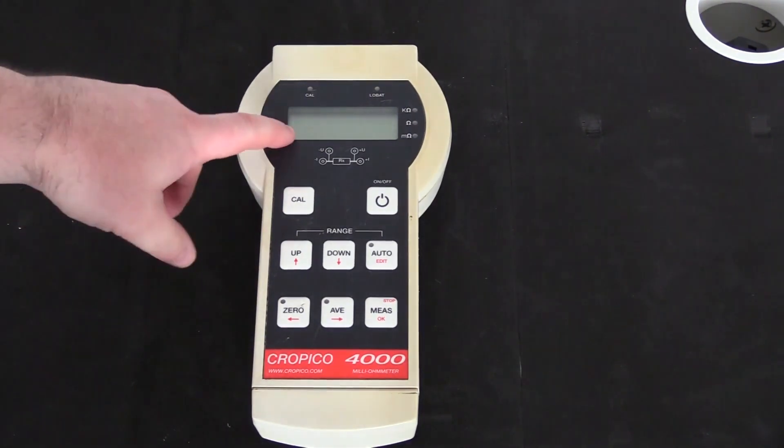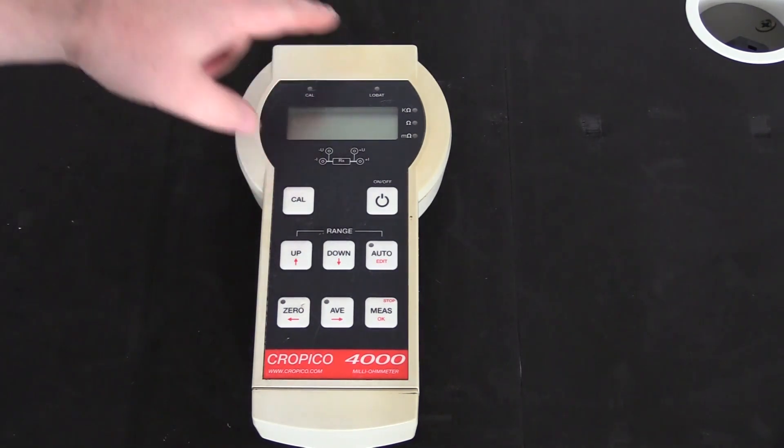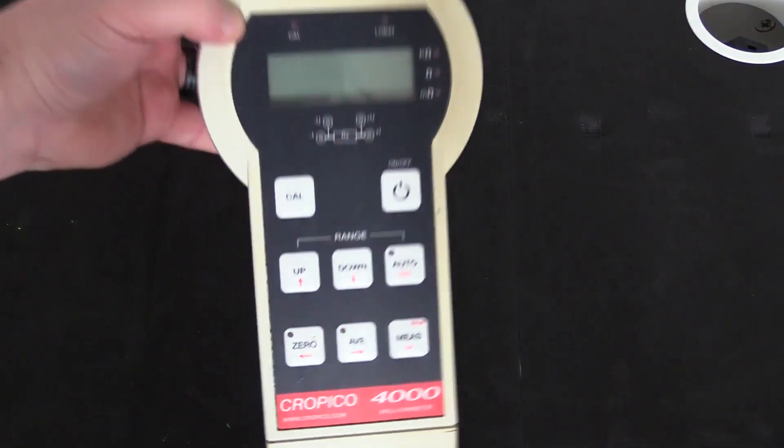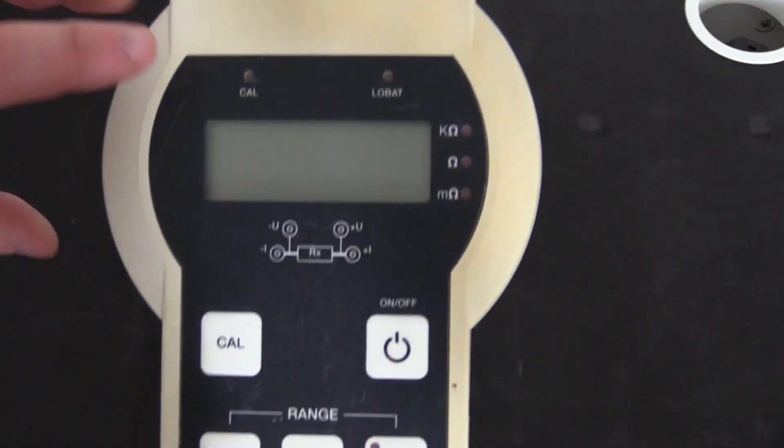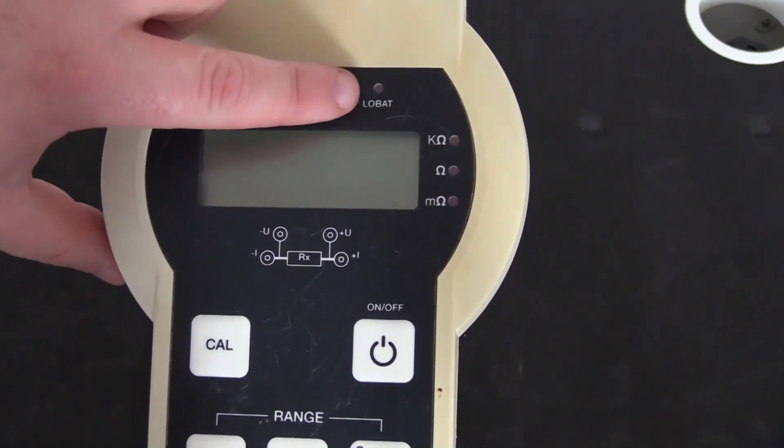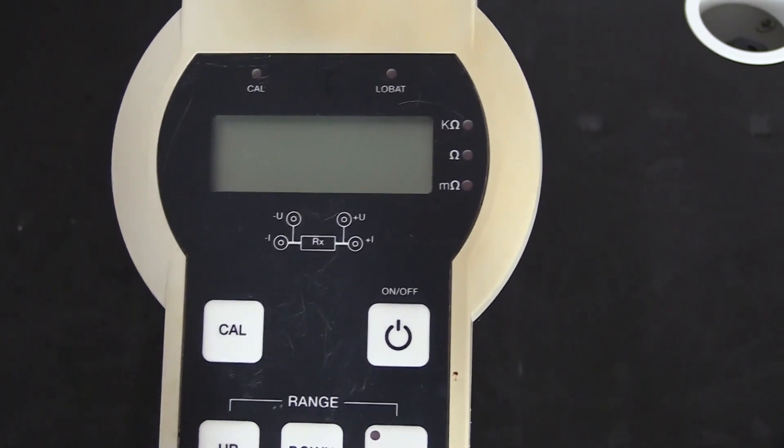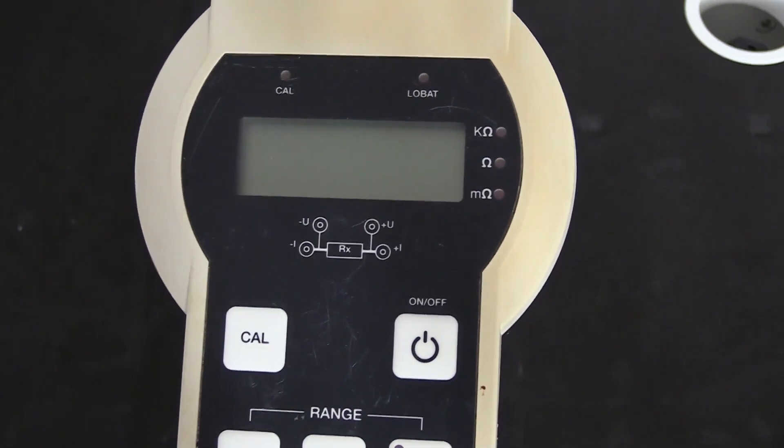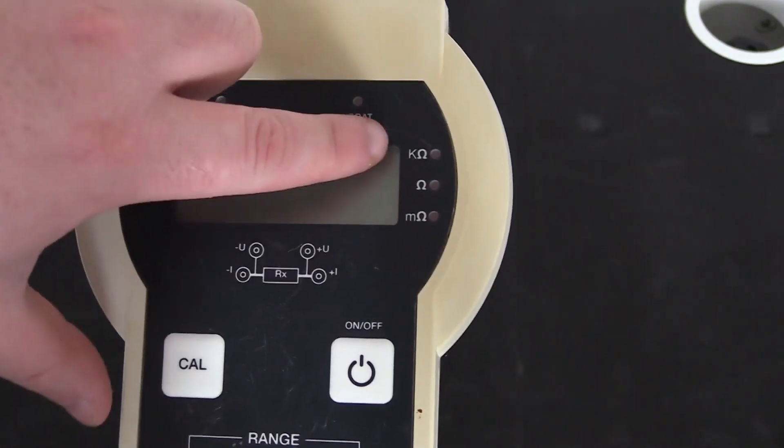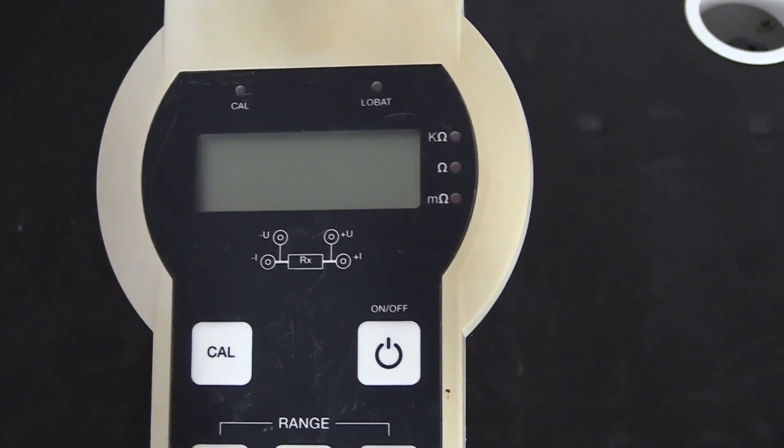Large LCD display gives clear readings to the measurements taken. We have a number of LED indicators on the device. As you'll see, we have an indicator for when it's in calibration mode. We have an indicator for when the battery is low. The batteries are five AA cells, so nice and easy to replace. We also have indicators for the measuring range and you can see we have a kilo ohm, ohm, and milli ohm measuring range.